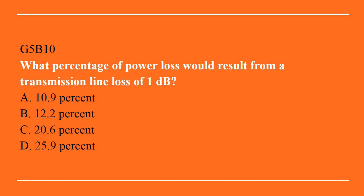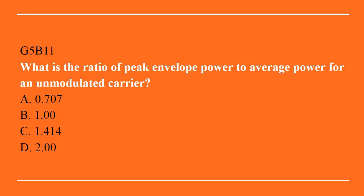G5B10: what percentage of power loss would result from a transmission line loss of 1 dB? A. 10.9%. B. 12.2%. C. 20.6%. Or D. 25.9%. Correct answer is C: 20.6%. G5B11: what is the ratio of peak envelope power to average power for an unmodulated carrier? A. 0.707. B. 1.00. C. 1.414. Or D. 2.00. Answer is B: 1.00.